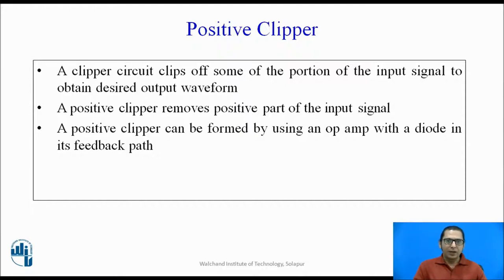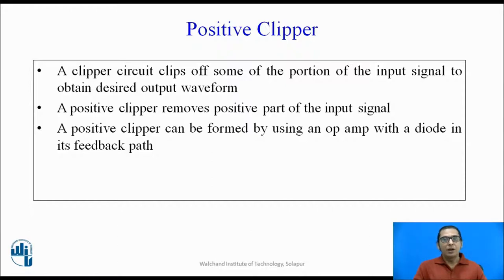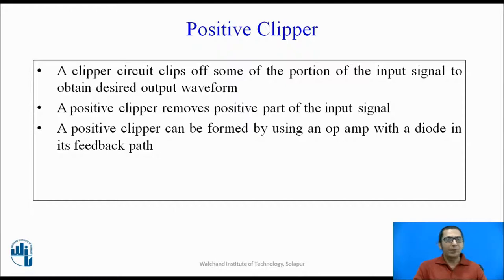What is a clipper circuit? A clipper circuit clips off or chops off some portion of the input signal or input waveform. There are two types of clipper circuit. A positive clipper removes the positive part, or the part towards the positive axis, of the input signal. A positive clipper can be formed using an op-amp and a diode in its feedback path. Let us have a look at the circuit diagram of a positive clipper.